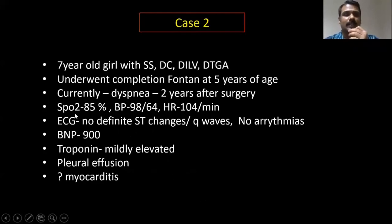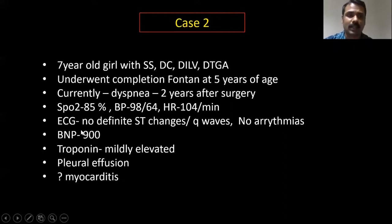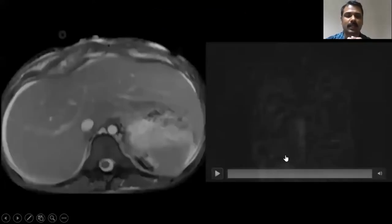The second case is a seven-year-old girl who underwent extracardiac Fontan for dextrocardia, double inlet left ventricle, and transposed great arteries. Her symptom was dyspnea and her saturation was 85%. ECG didn't show any significant abnormality, and there was no feature suggesting tachycardia-induced cardiomyopathy. Troponin was mildly elevated and one of the clinical suspicions was myocarditis.